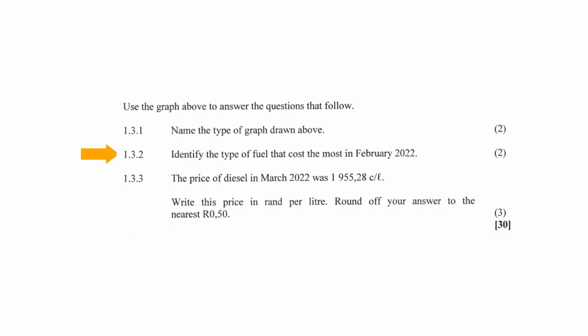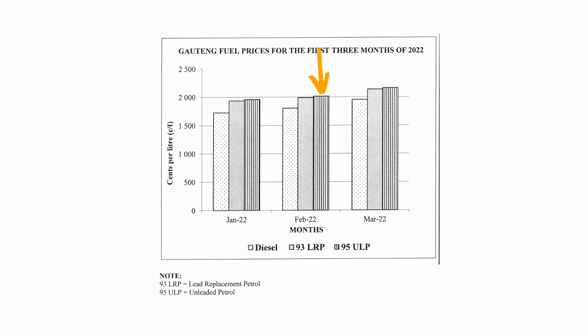In question 1.3.2, you have to identify the type of fuel that cost the most in February 2022. From the graph, the type of fuel that cost the most in February 2022 is 95 unleaded petrol.